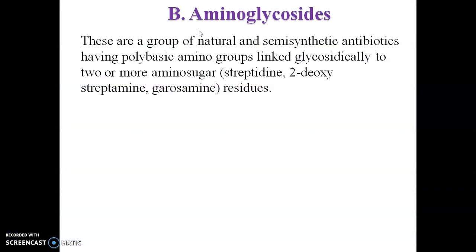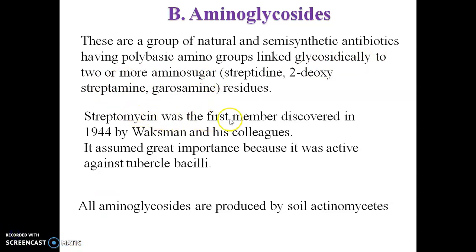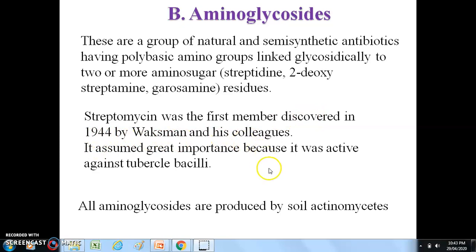The next antibiotic affecting protein synthesis is aminoglycoside. Aminoglycosides are a group of natural and semisynthetic antibiotics having polybasic amino groups linked with glycosides of two or more amino sugars or residues. Streptomycin was the first member, discovered in 1944 by Waksman and his colleagues, and is active against tubercular bacilli. All aminoglycosides are produced by soil actinomycetes.